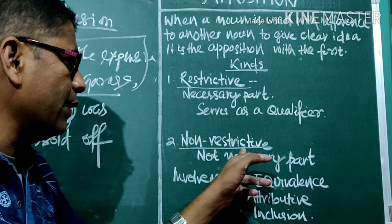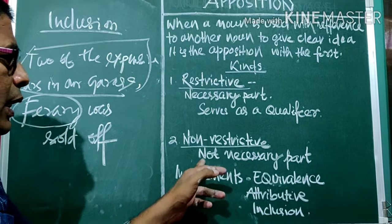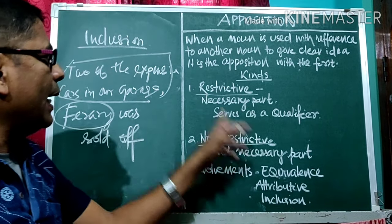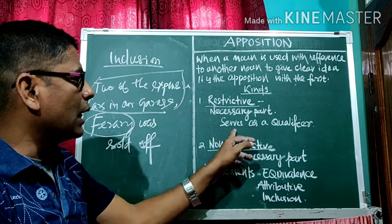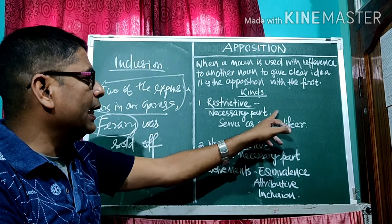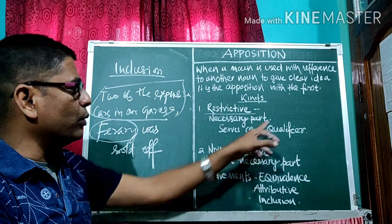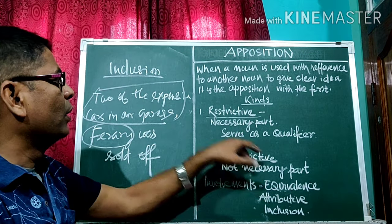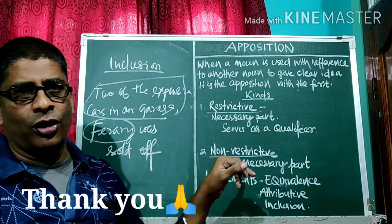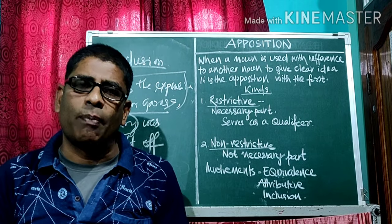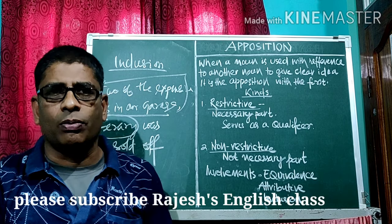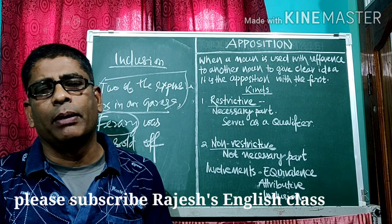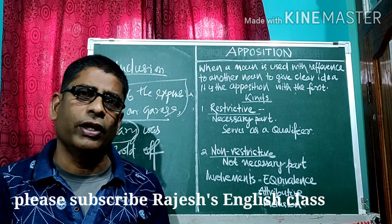So this is the non-restrictive Apposition, which implies equivalence, attributive, and inclusion. And restrictive Apposition is the necessary part, serves as a qualifier, and is used with a determiner or with omission of the determiner. This is all about Apposition. Before concluding, I request you all to please subscribe, press the bell icon, and share to get many more English lessons. Thank you.